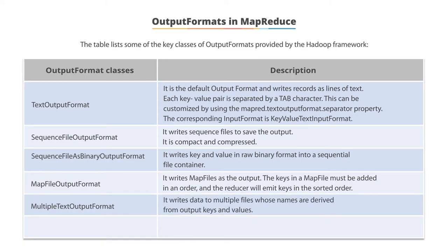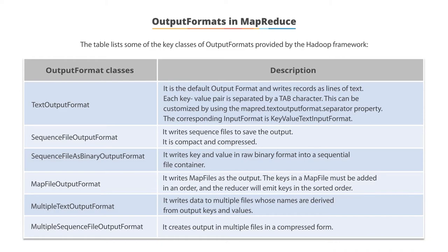Multiple text output format writes data to multiple files whose names are derived from the output keys and values. Multiple sequence file output format creates output in multiple files in a compressed form.